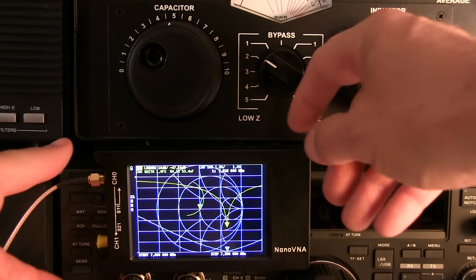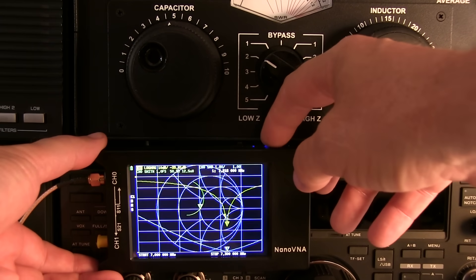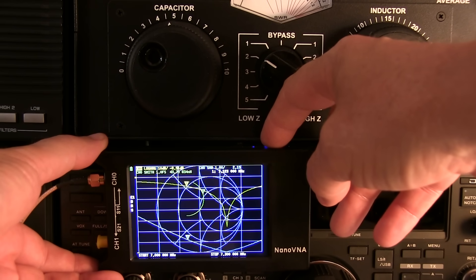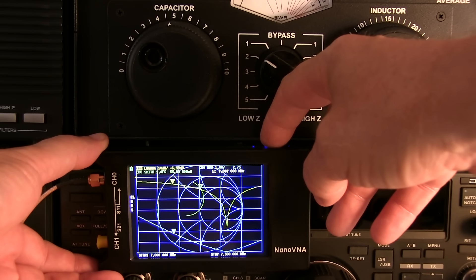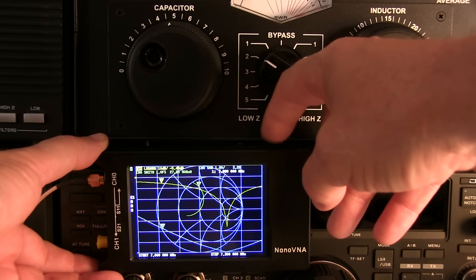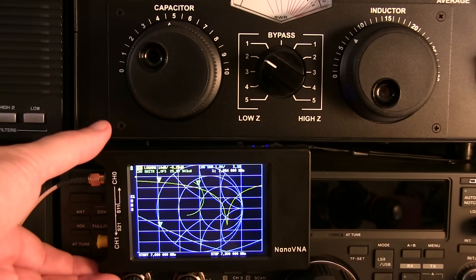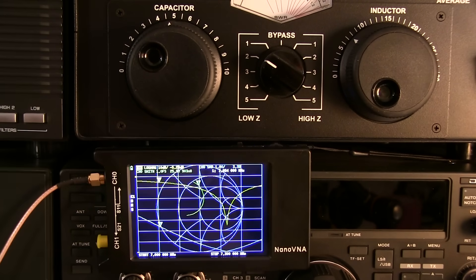Now the first thing I'm going to do is move my marker down to somewhere in the CW portion of the band, maybe around 7.07, 7.06, 7.05, something in the neighborhood. So to give me an idea, that's the point that I want to now try to optimize with the tuner.